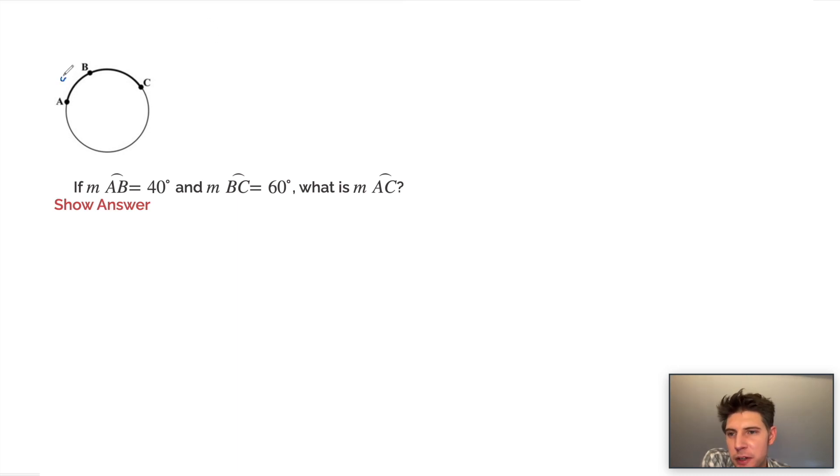They're telling us this AB is 40 degrees and this BC is 60 degrees. So we know that if we add 40 plus 60, we should get the whole thing, which is 100. So the answer to this is 100 degrees.